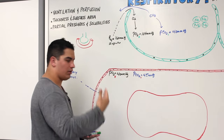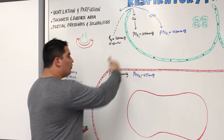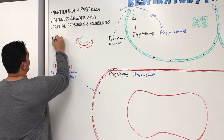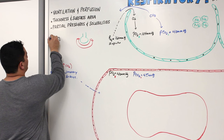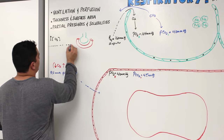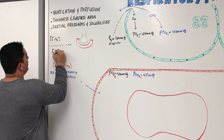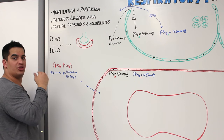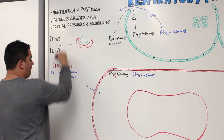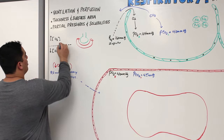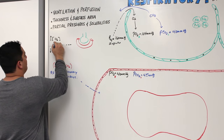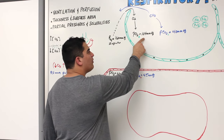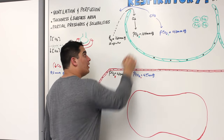According to the laws of diffusion, when something is in higher concentration on one side of a semi-permeable membrane and lower concentration on the other, it moves from high pressure to low pressure. Look at the gradient difference in oxygen: 104 mmHg in the alveoli versus 40 mmHg in the blood — that's a steep partial pressure gradient of about 60 mmHg.